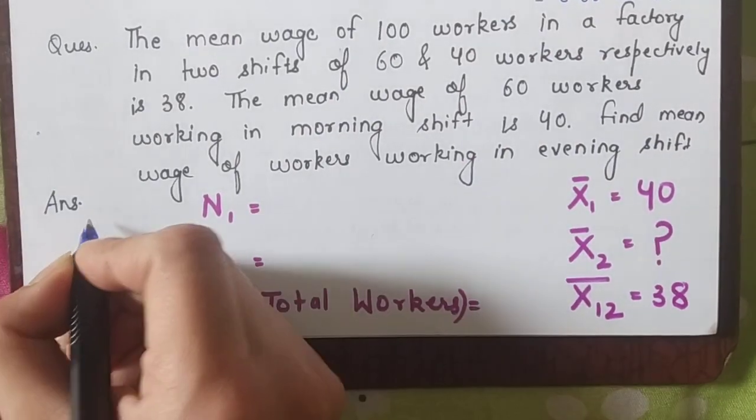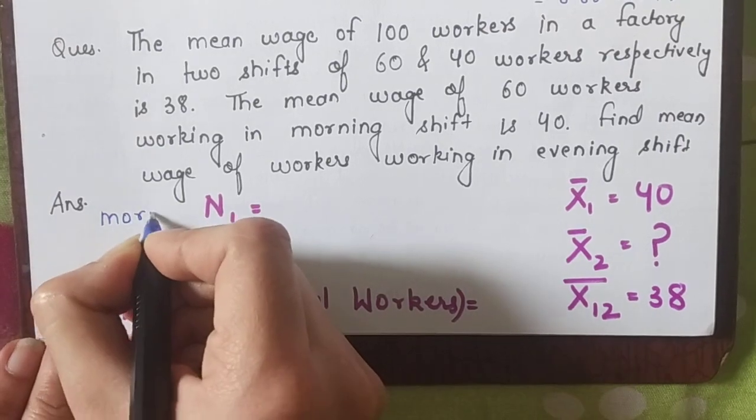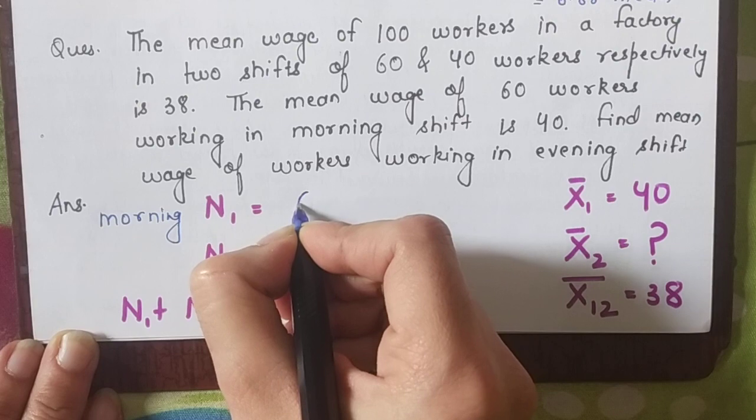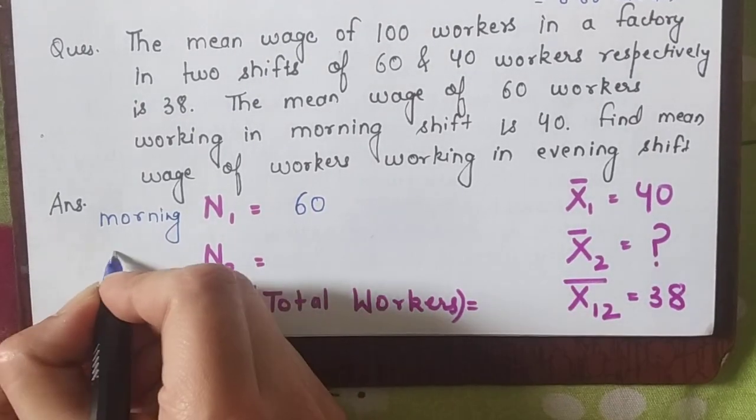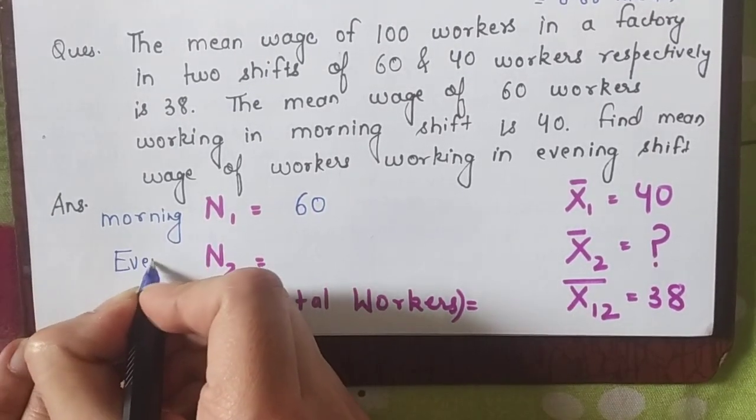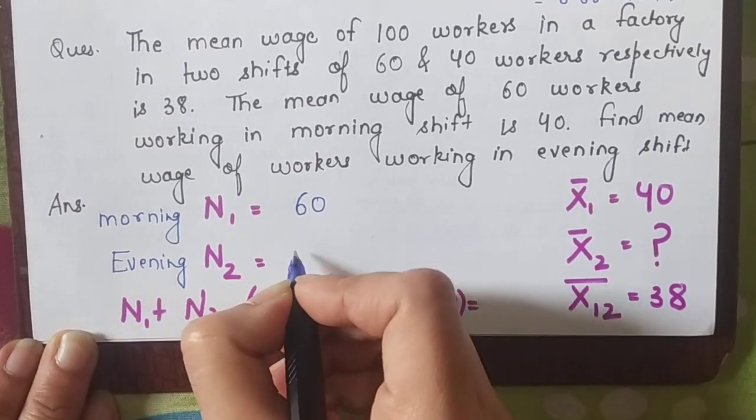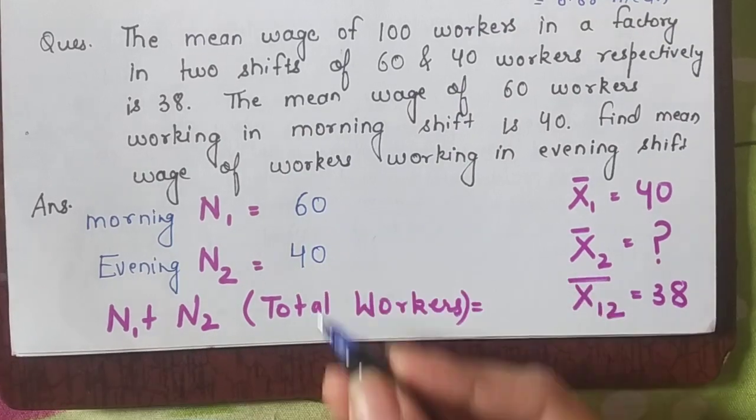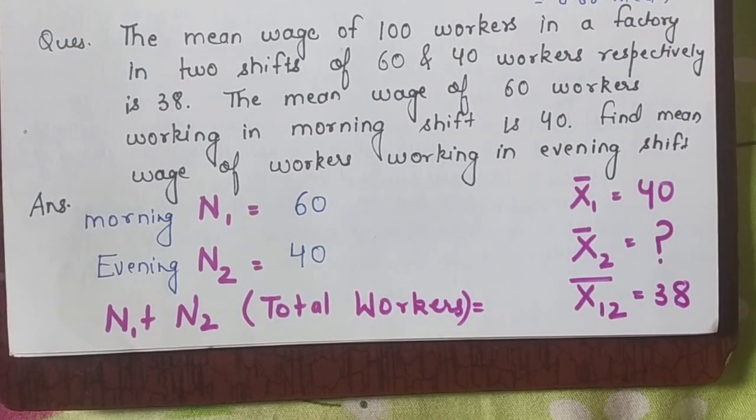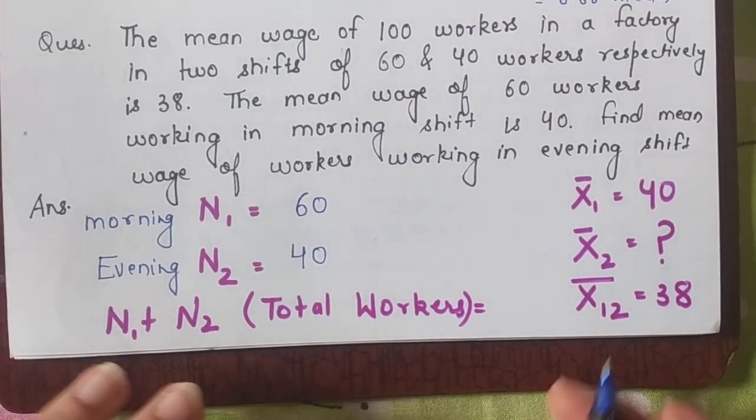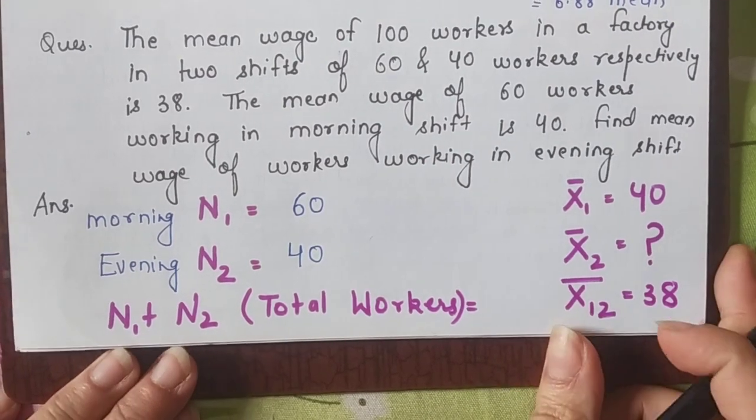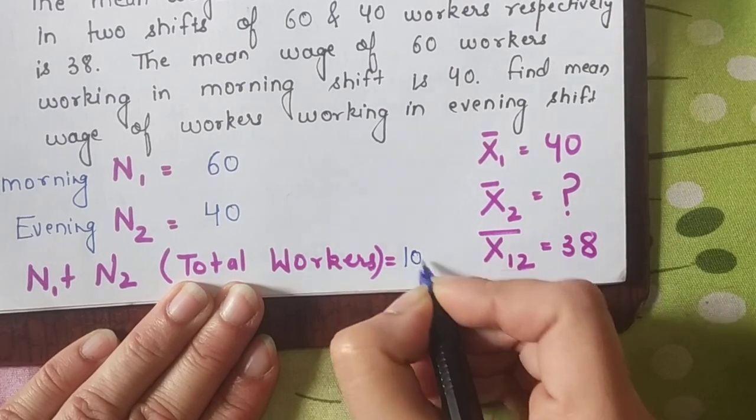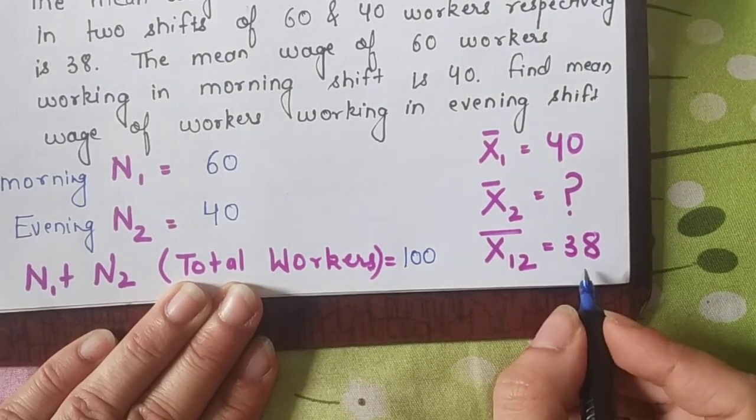Then they say the mean wage of the 60 workers working in the morning shift is 40, and find the mean wage of the workers working in the evening shift. So for morning shift, number of workers is 60 and their mean is 40. For evening shift, number of workers is 40 (because total workers are 100, and morning has 60, so evening has 100 minus 60 = 40). Their mean is not given, and we have to find it. Total workers in the factory are 100 and their combined mean is 38.